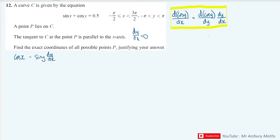And then when I differentiate 0.5, I get 0. So now I can make dy by dx the subject. I can write that cos x is equal to sin y dy by dx. I can divide through by sin y, which is going to give me dy by dx is equal to cos x over sin y. And like we said before, we need that to equal 0 because the gradient is equal to 0 when it's parallel to the x-axis.